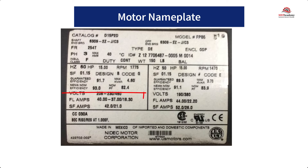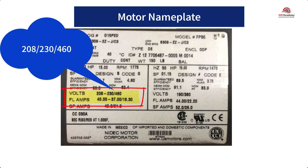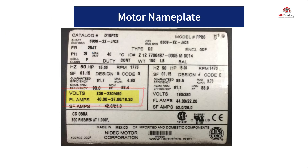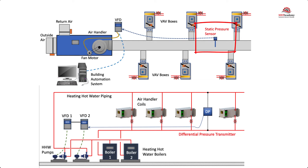The values shown here are for this example motor nameplate. You need to know full load amps — in this case, the nameplate shows 40, 37, and 18.3 as the full load amps. Each of those three numbers is represented by the voltage, which is either 208, 230, or 480, and the horsepower being 15, the speed, the RPM being 1775. Another thing to think about with your variable frequency drive is what's going to control the drive. We showed two examples: one was a static pressure sensor for airflow, and the other was a differential pressure transmitter for water flow.